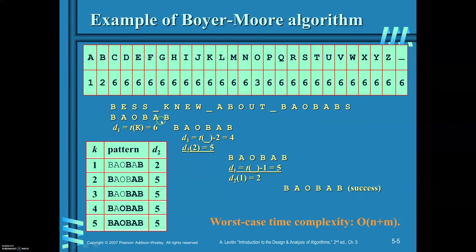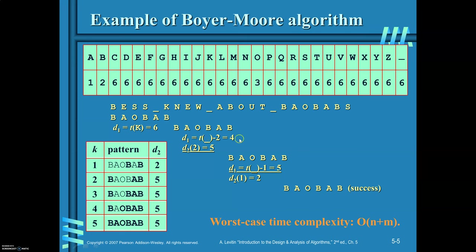This is the text given to you. Once you have this text, now align the pattern with the text. K is not matched — since the number of characters matched is zero, you look up the shift value for K in the bad symbol table, which is equal to six. So you shift by six character length. After shifting, two characters are being matched and the third one is not matched.